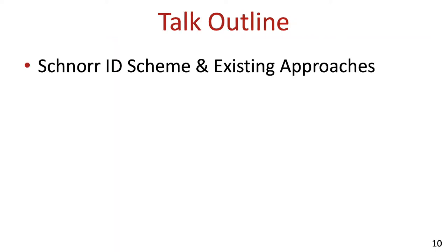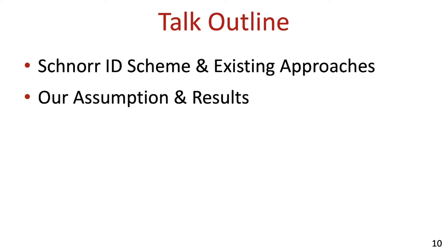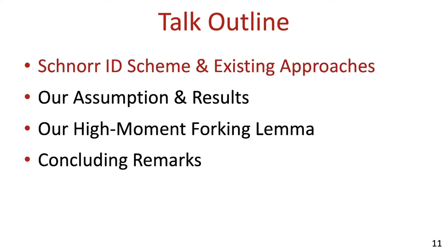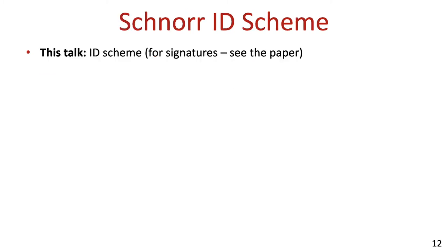The remainder of the talk will be arranged as follows. We'll start by reviewing Schnorr's ID scheme and the existing reductions to the D-log problem, then we will present our refined assumption and our results in more detail, followed by the new high-moment forking lemma, and finally we'll conclude with some closing remarks. From this point on we'll focus mainly on the ID scheme and you can check the paper for the extensions to Schnorr signatures.